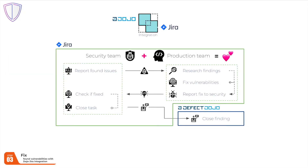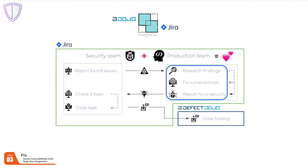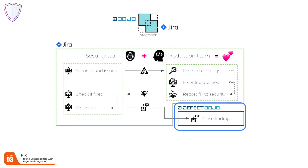Vulnerability fixing is a complex process that requires the involvement of both the security team and the development team. The process begins with the security team, which reports its findings to the development team. The development team's job is to analyze these findings, fix found vulnerabilities, and report to the security team when the fix has been made. Then the security team verifies the fix and closes related tasks in Jira. Thanks to the existing integration between Jira and Defect Dojo, the changed status of a finding is updated in Defect Dojo as well.